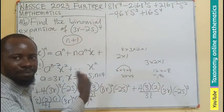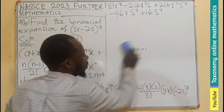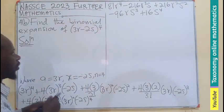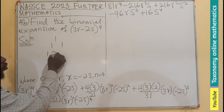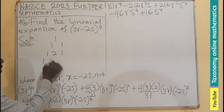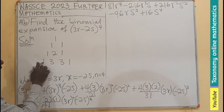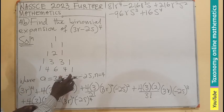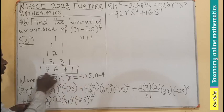We can also use the Pascal triangle to arrive at the same answer. To generate the Pascal triangle: start from 1, then 1, 1; then 1, 2, 1; then 1, 3, 3, 1; then 1, 4, 6, 4, 1. Since we need N plus 1 equals 5 terms, the coefficients for our expansion are 1, 4, 6, 4, 1.